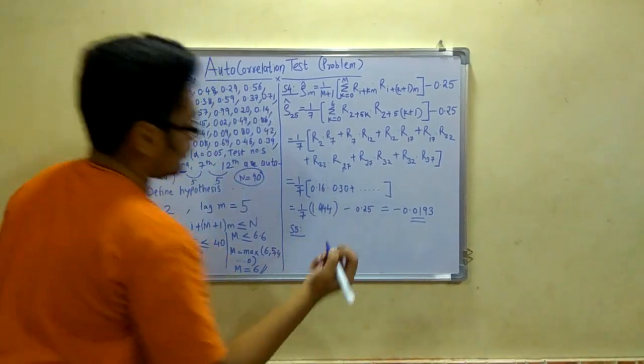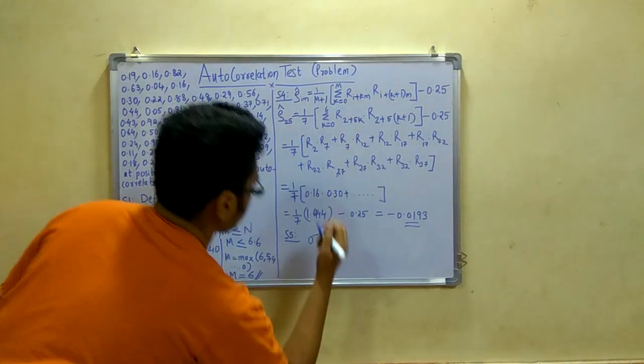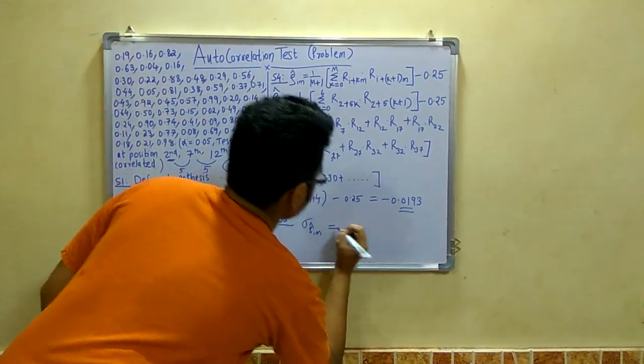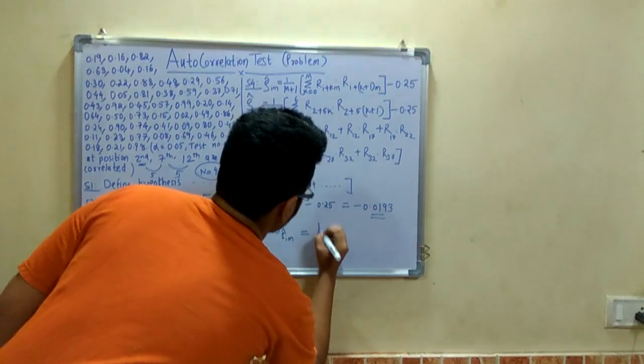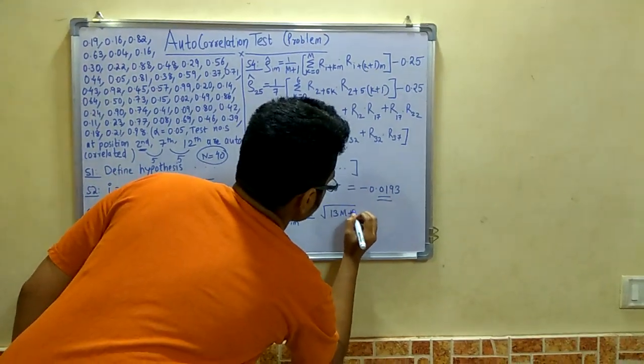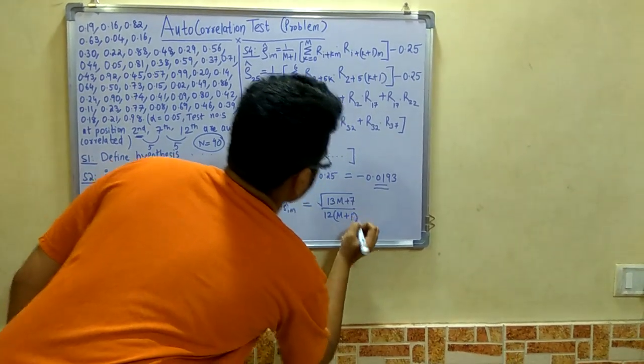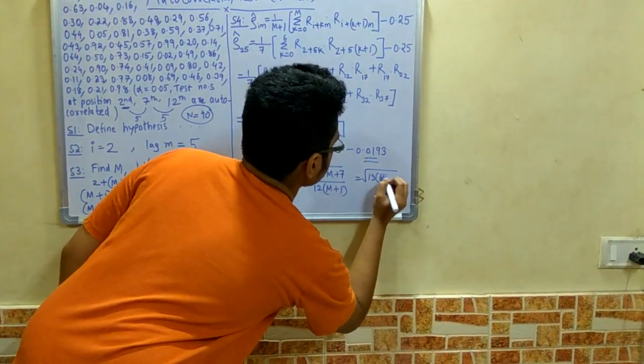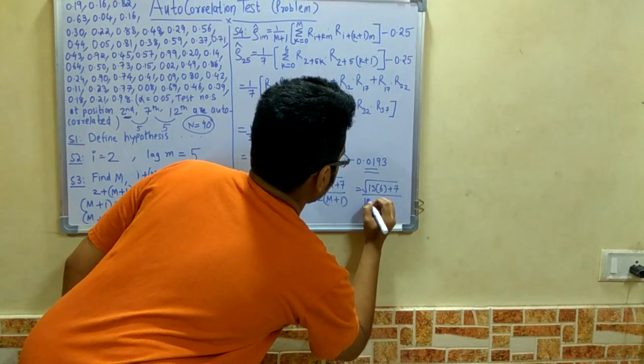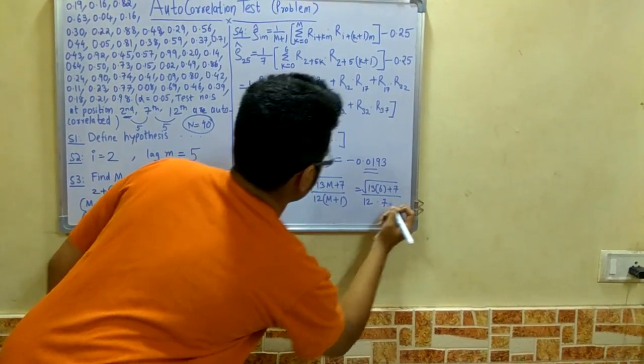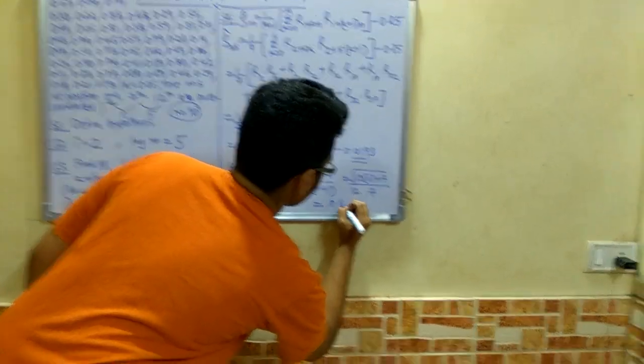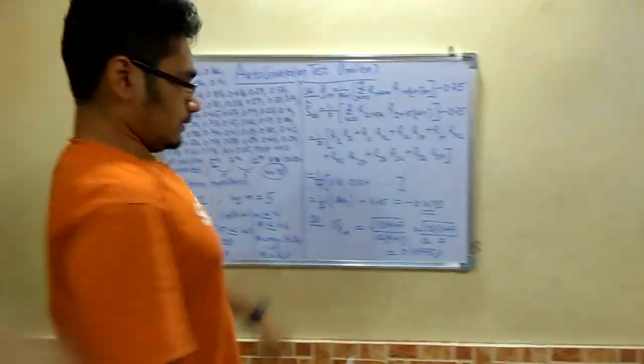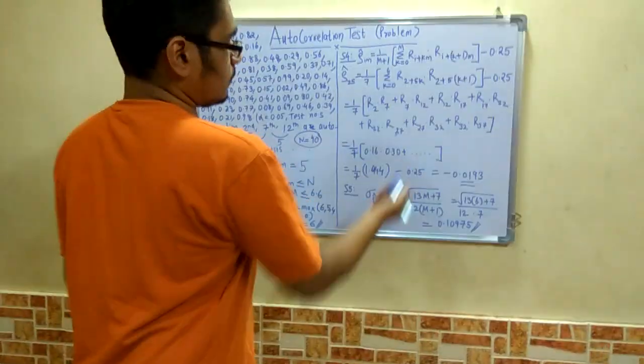After this you have to determine step 5. That is step 5 is standard deviation of this estimator. So that is sigma rho cap IM. That is rho cap 2,5 is equal to, that is a formula is there. That is 13M plus 7 divided by 12 times M plus 1. So your M is 6 here. So you just have to put 13 multiplied by 6 plus 7 divided by 12 times 6 plus 1, that is 7. So you will get a value of 0.10975. This is the value after you solve the expression for rho, sigma rho IM that is standard deviation.